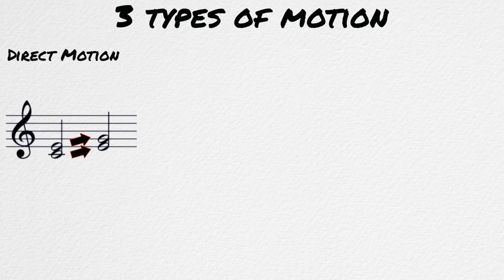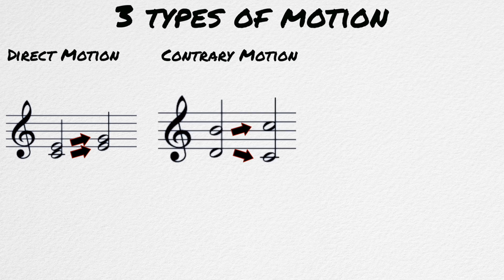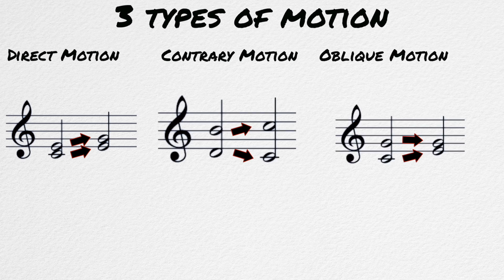Motion. There are three kinds of motion that are possible with two voices. Direct motion, when the two voices move in the same direction together. Contrary motion, when the two voices move in different directions. And oblique motion, when one voice stays the same and the other changes direction.